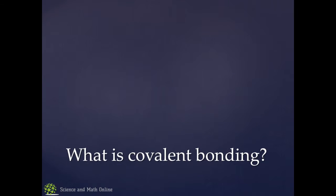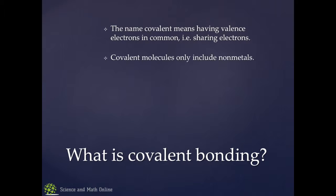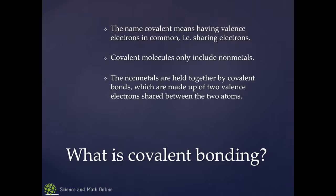First of all, we got to talk about what is covalent bonding. The name covalent means having valence electrons in common, aka sharing electrons. They're only made from nonmetals, and basically the nonmetals are held together by a covalent bond, which is made of two valence electrons being shared between two atoms. Basically they both kind of get credit for both electrons.